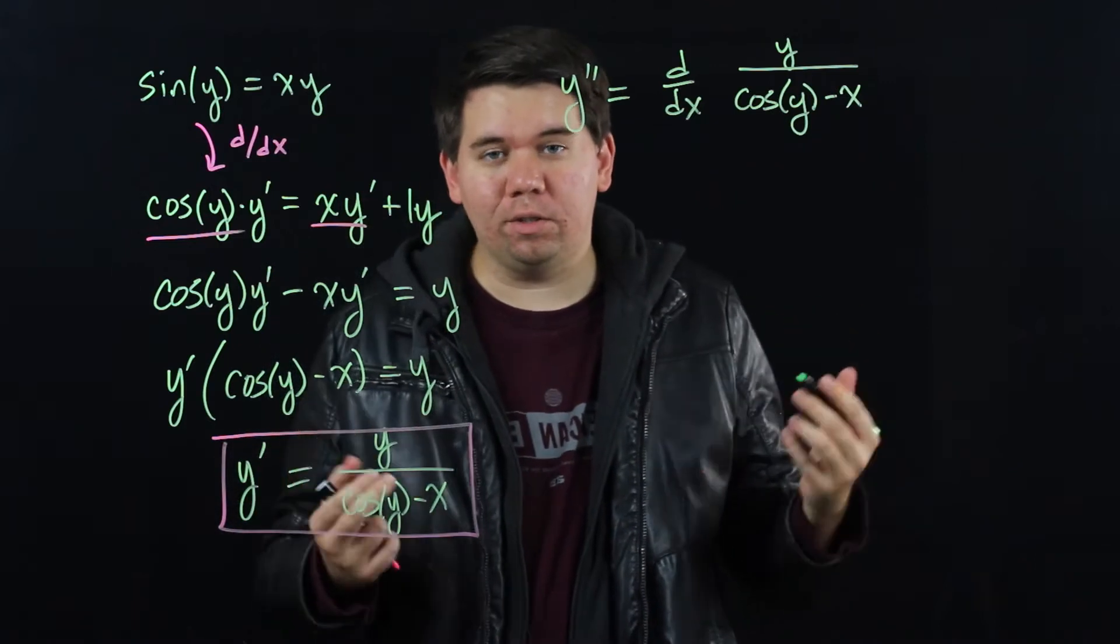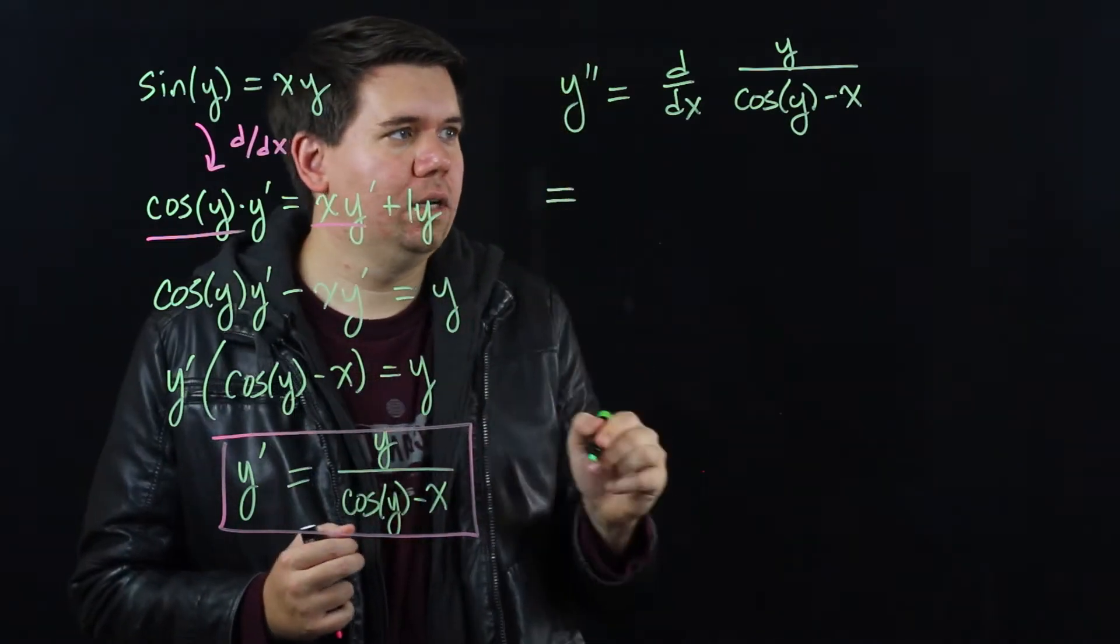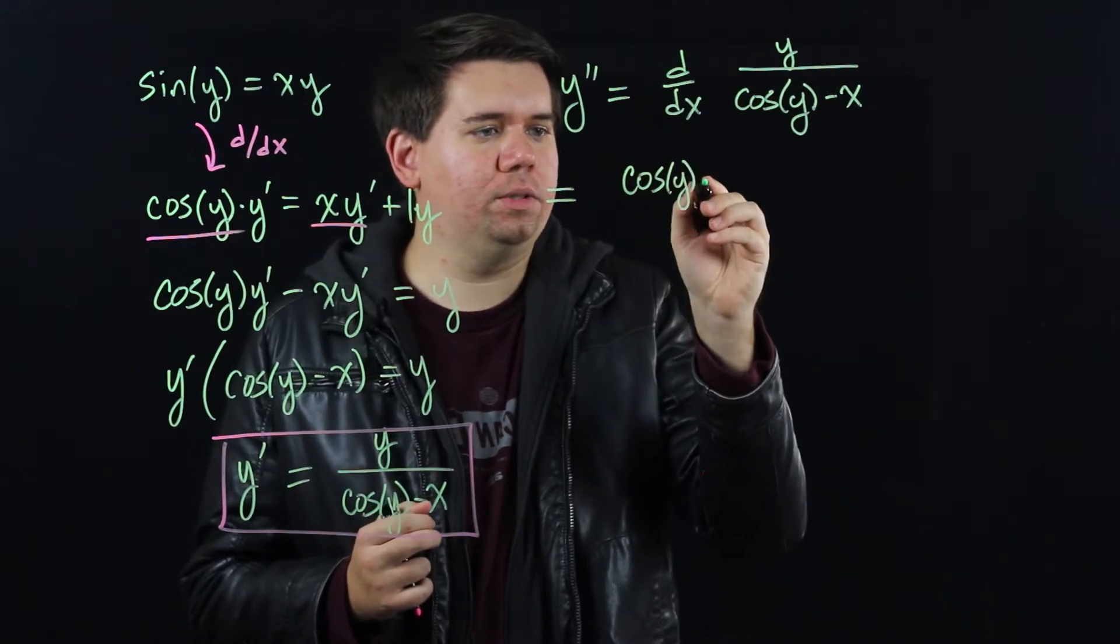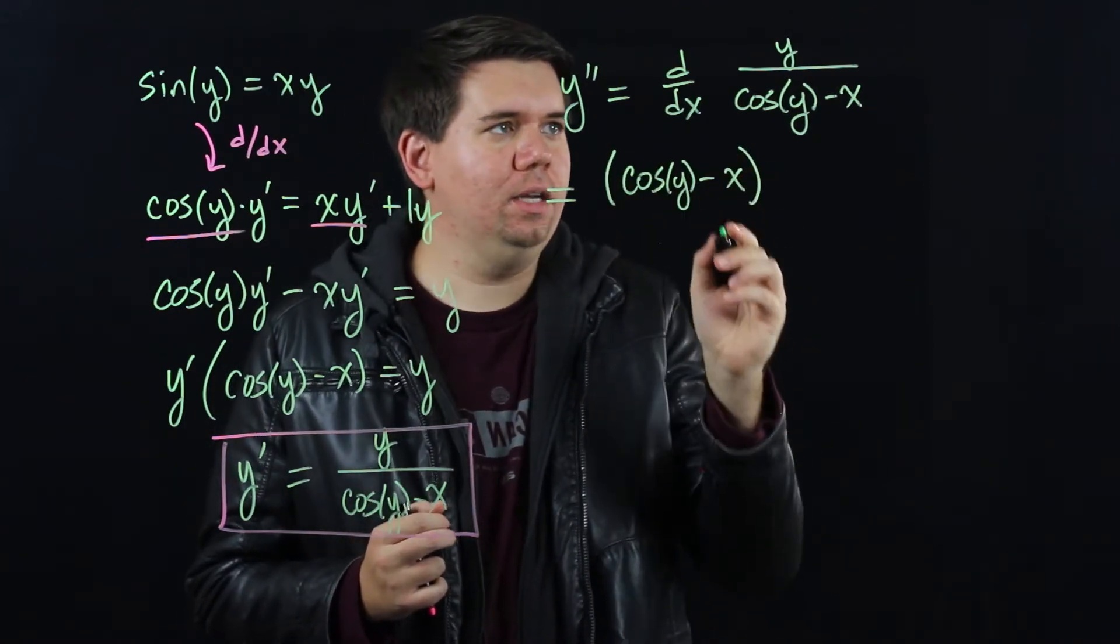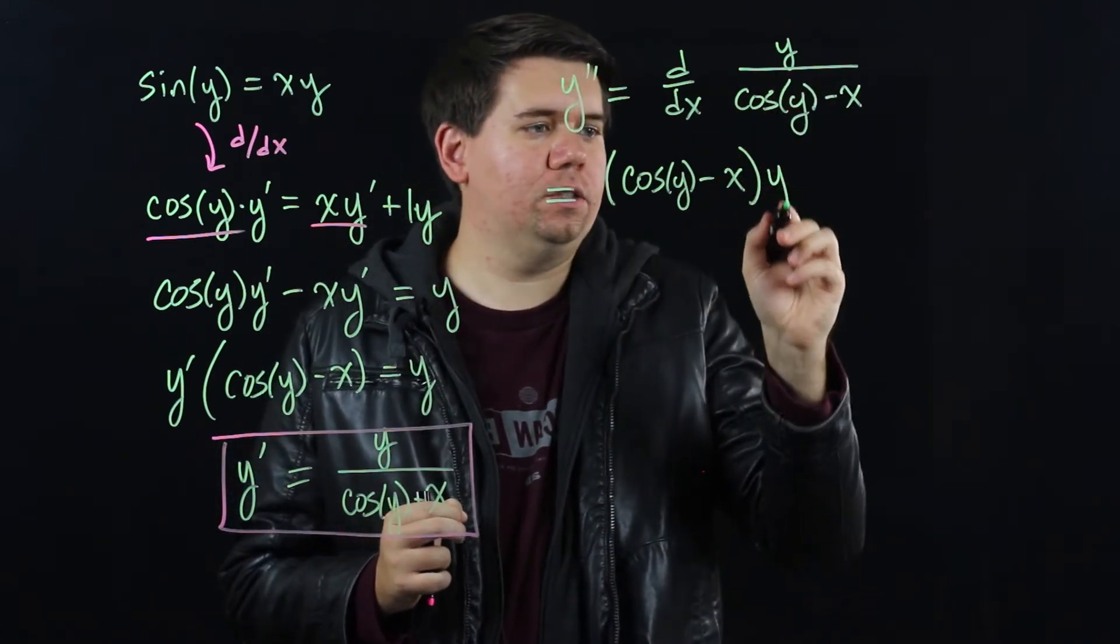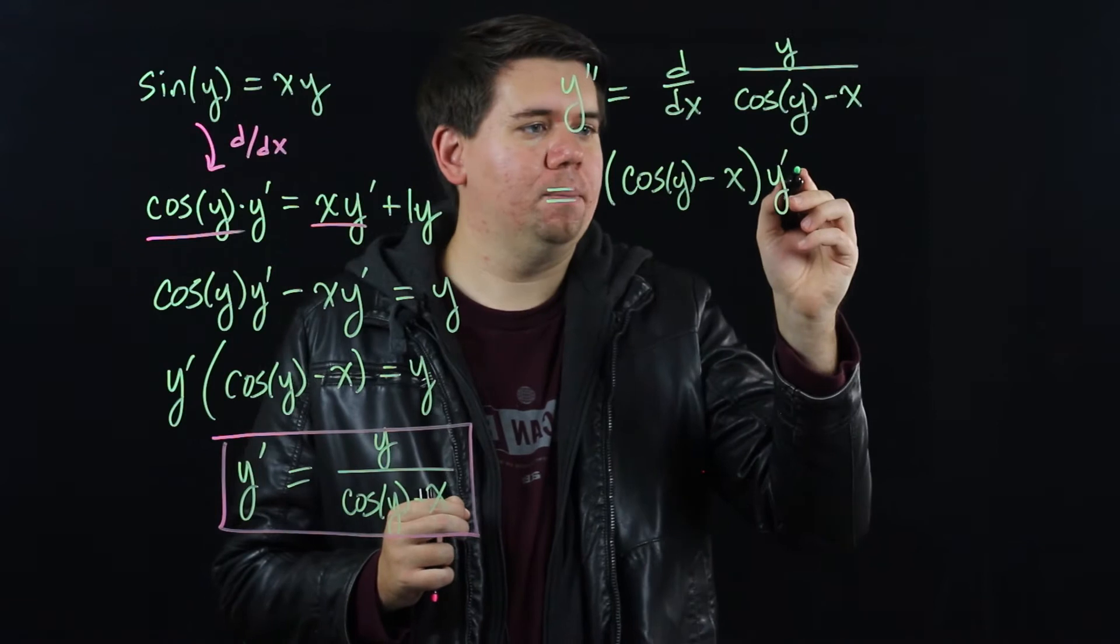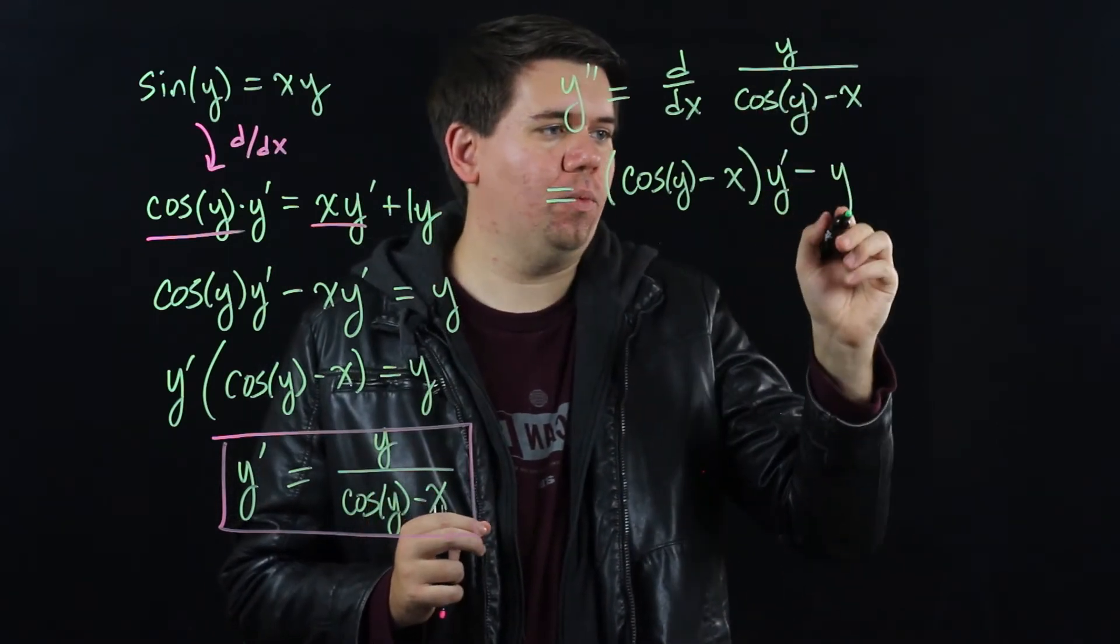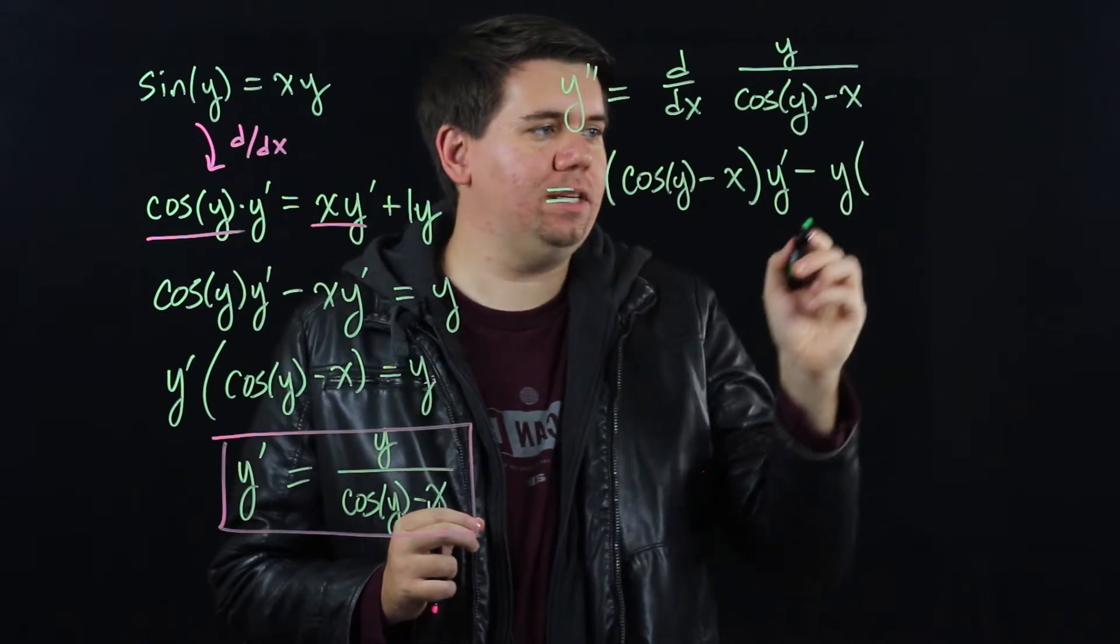So we'll need to make generous use of the quotient rule. Let's hold the bottom, cosine of y minus x, and times that all by the derivative of the top. The derivative of y is just y prime. Minus, stay with me, hold the top y times the derivative of the bottom.